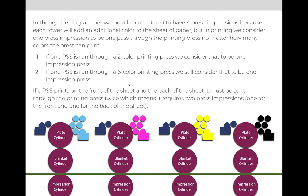In theory, the diagram below could be considered to have four separate press impressions because each tower that the paper goes through when it's printing will have one impression. An impression occurs when the paper goes between the impression and the blanket for the black tower, then on the yellow tower, then the magenta tower, and then the cyan tower. But in printing, if it's all going through a single printing press in one pass on press, we only consider it to be one impression. So if we are printing one press size sheet through a two-color printing press, even though two impressions technically occur, we still only consider that to be one impression. One sheet means one impression through the press.